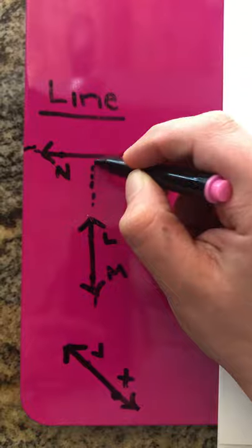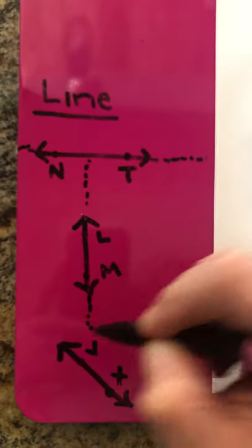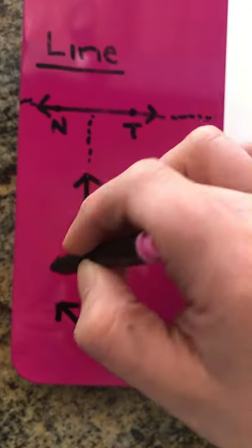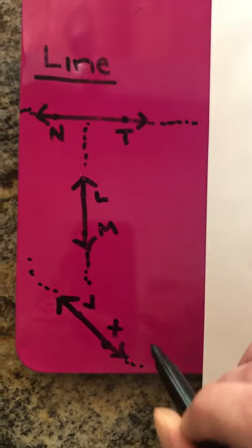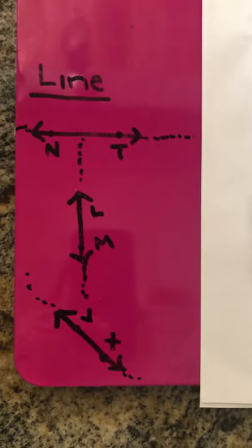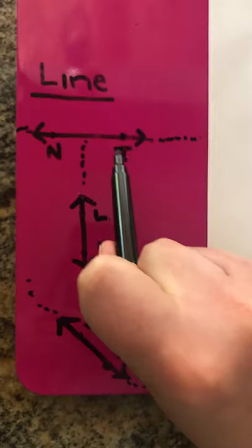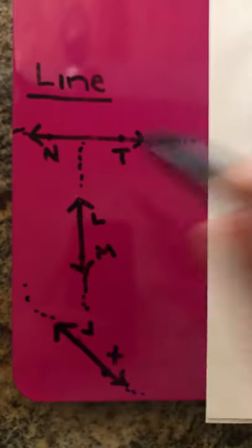Again, those arrows mean you can go on and on in both directions. The same here with our last one. We could go on and on again in a straight path. So a line is straight and it has two arrows.